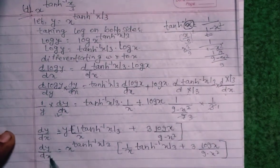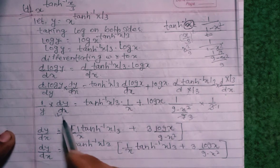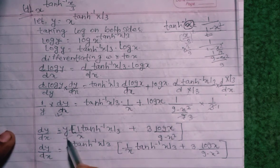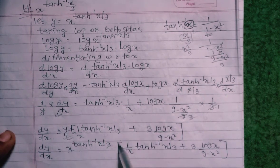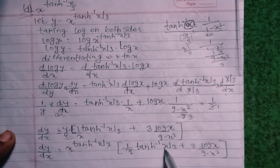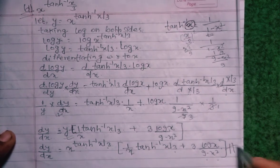So dy/dx equals y times [1/x tan⁻¹(x/3) plus 3 log x divided by (9 minus x²)]. Substituting y equals x^(tan⁻¹(x/3)): dy/dx equals x^(tan⁻¹(x/3)) times [1/x tan⁻¹(x/3) plus 3 log x divided by (9 minus x²)]. That is the final answer.